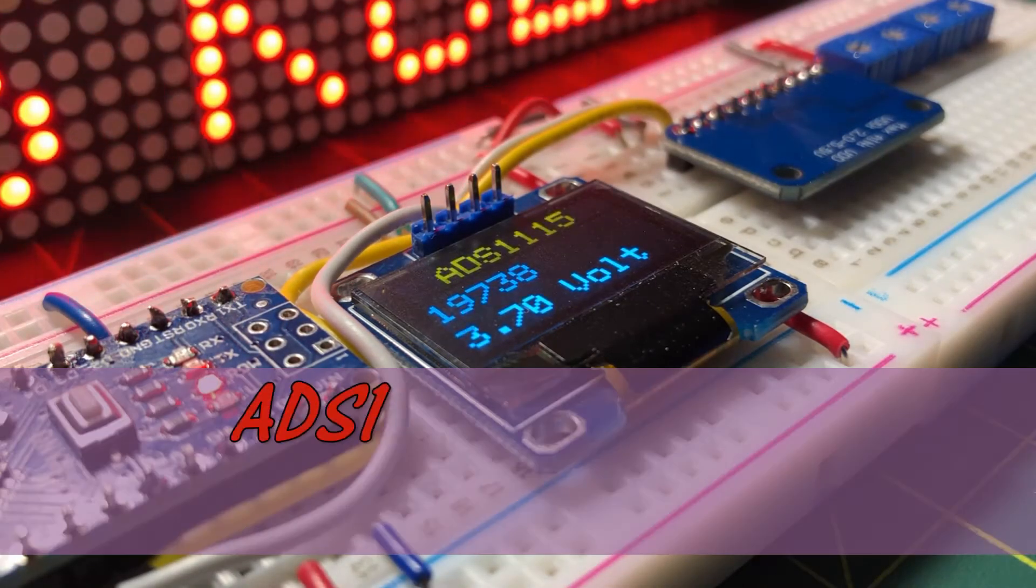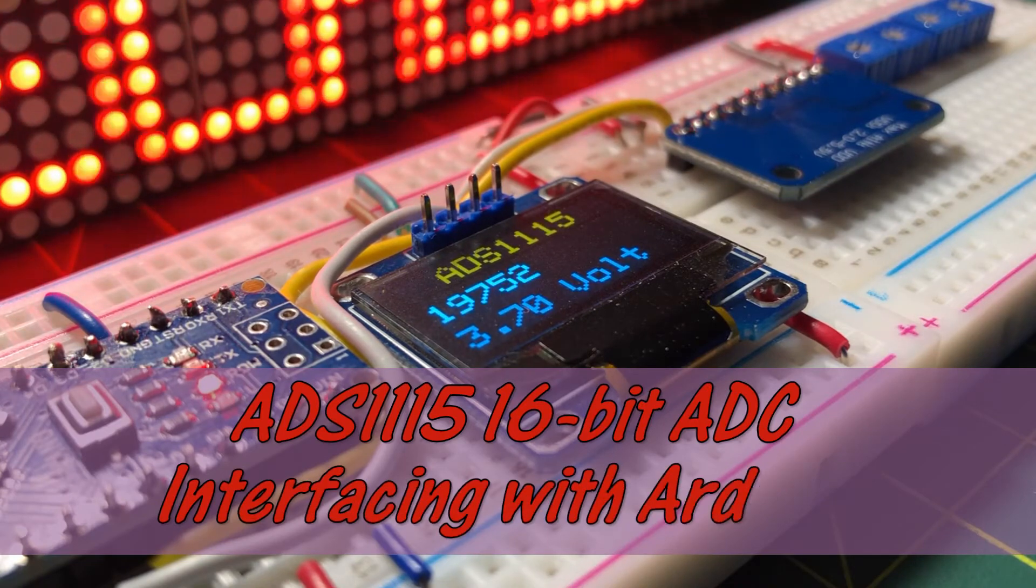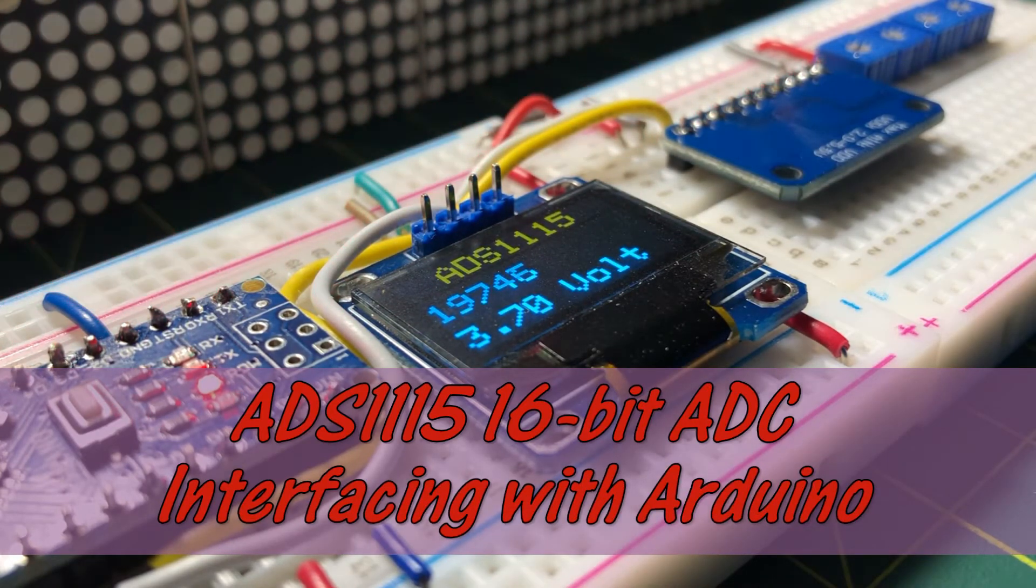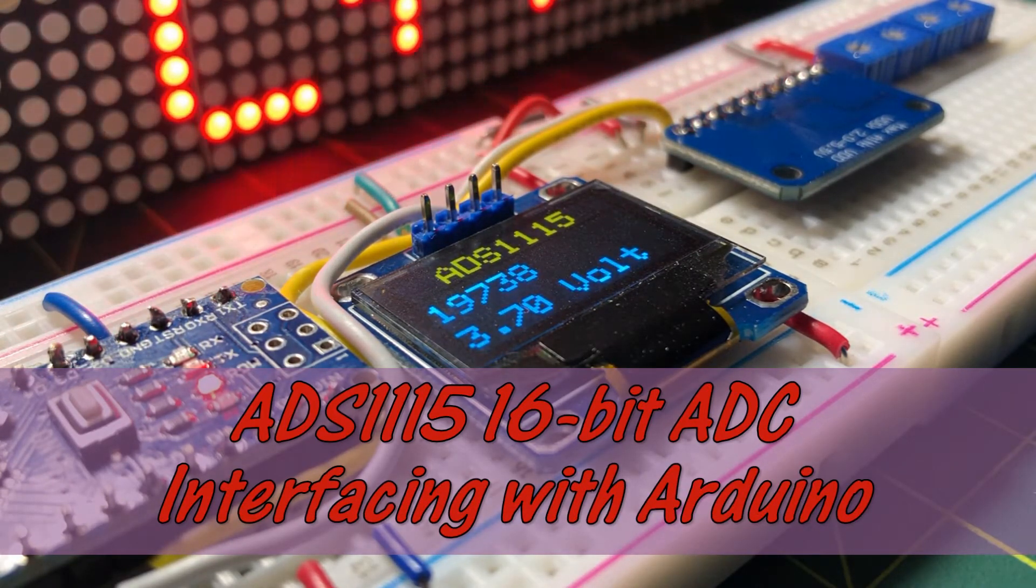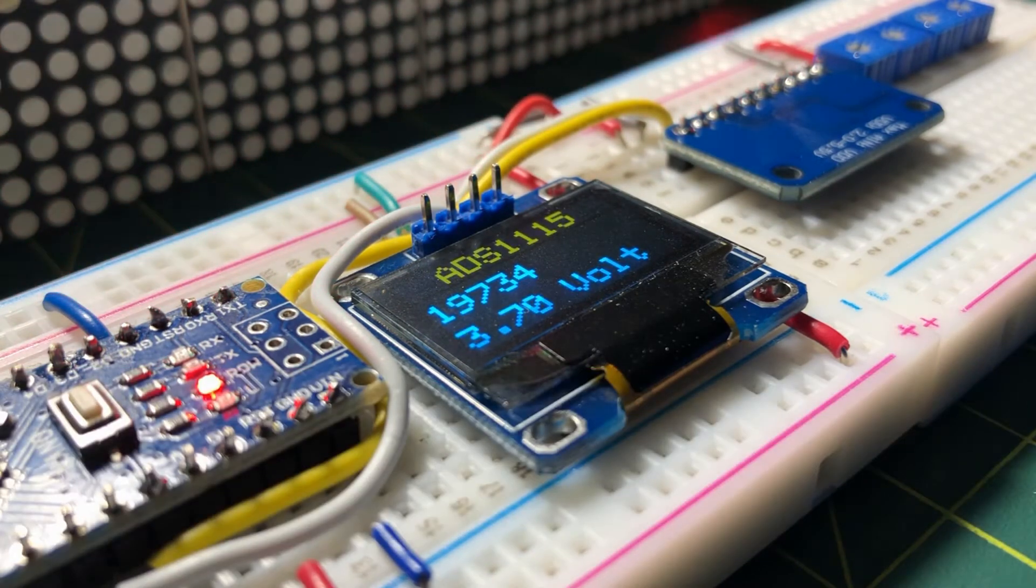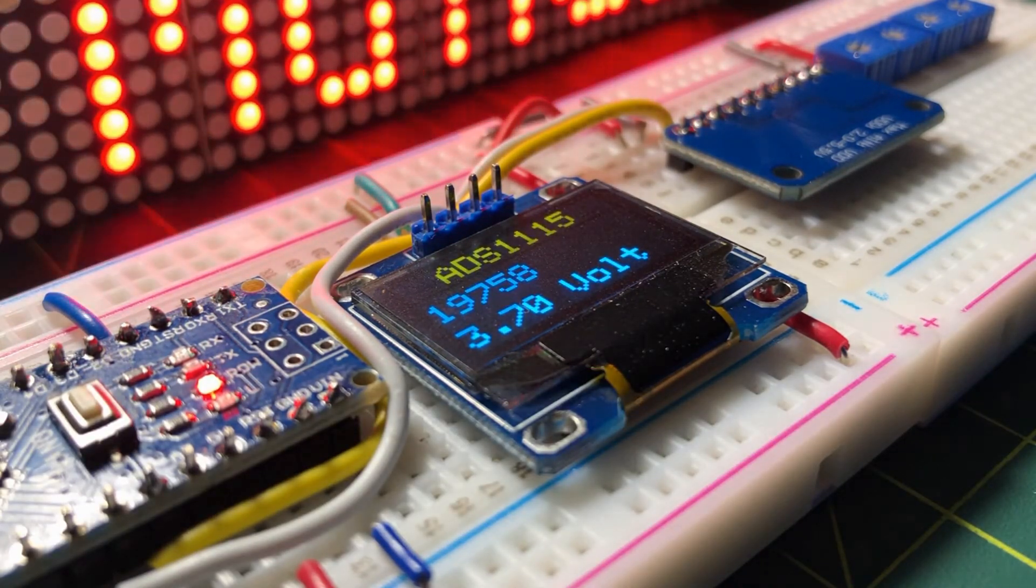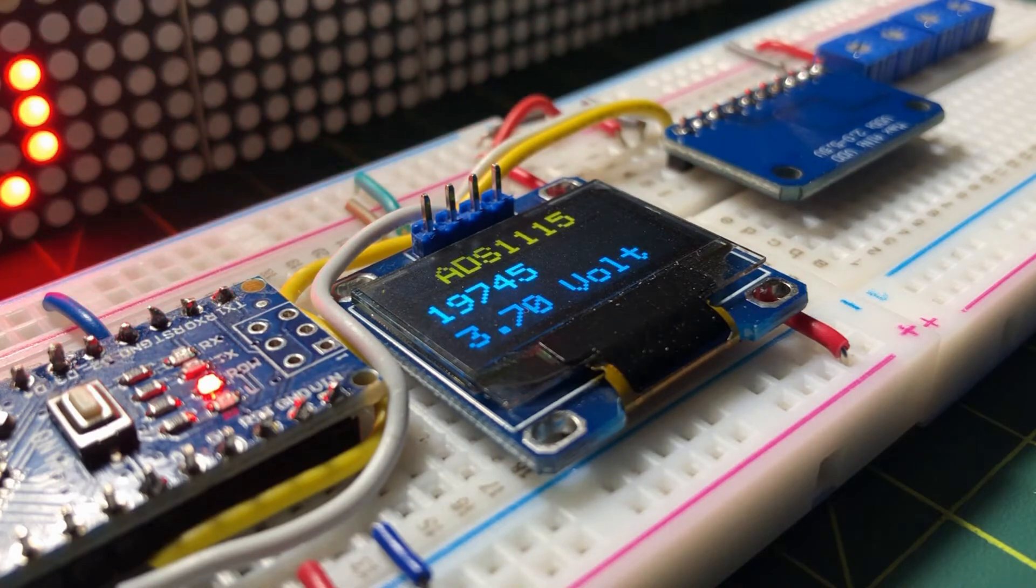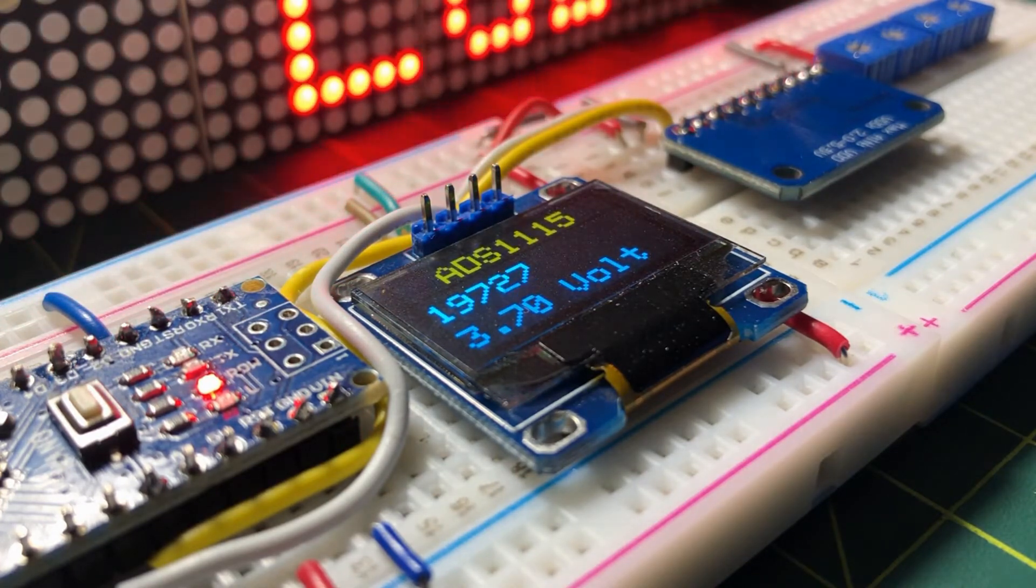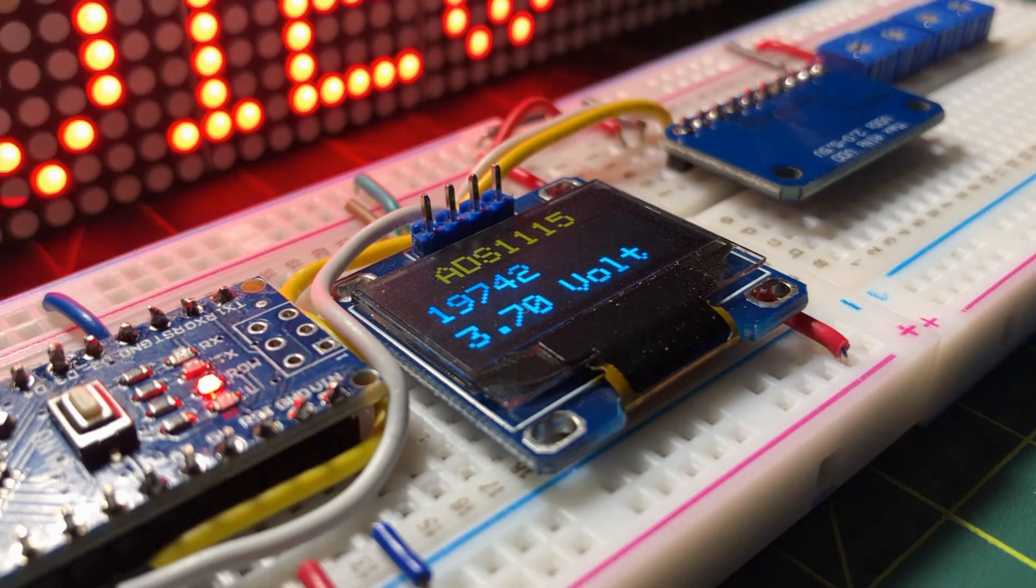This video presents the ADS-1115, which is a 4-channel 16-bit analog-to-digital converter. The ADS-1115 also features a programmable gain amplifier and a programmable digital comparator.